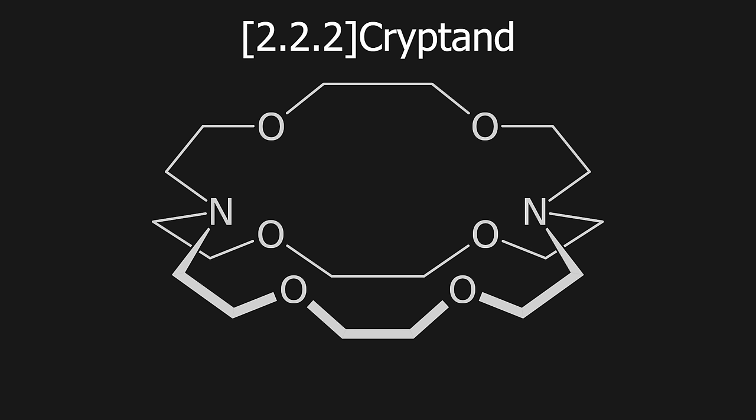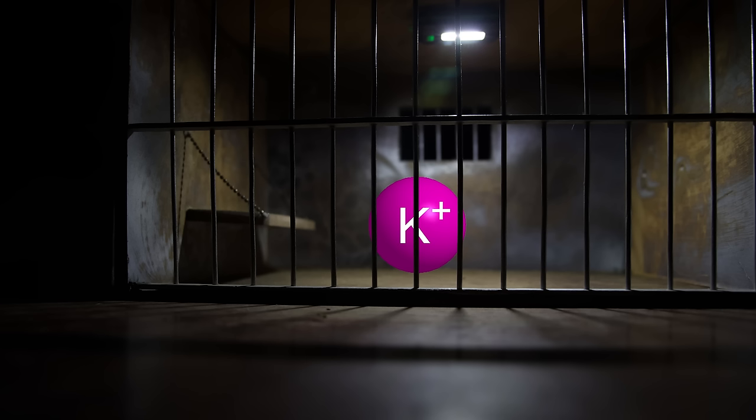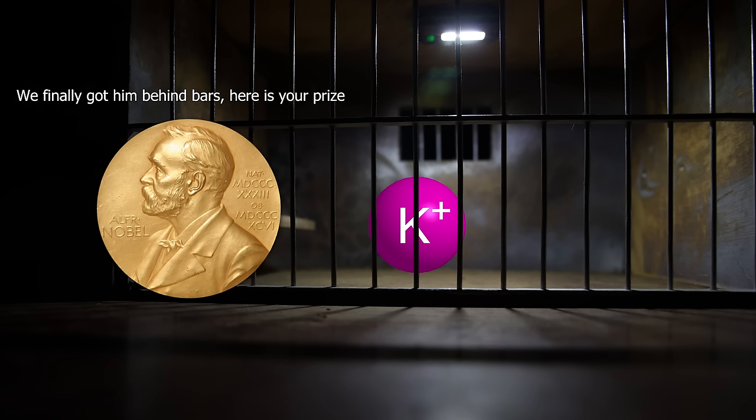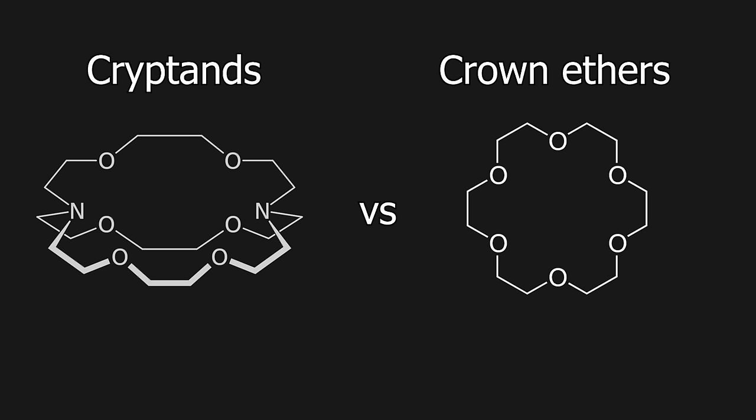Cryptands are a class of molecules that preferentially lock up certain ions, and were once the subject of a Nobel Prize in 1987. They are comparable to crown ethers, but more difficult to produce, and also bind alkali metal cations more strongly. This makes them more suitable for isolating these types of ions.